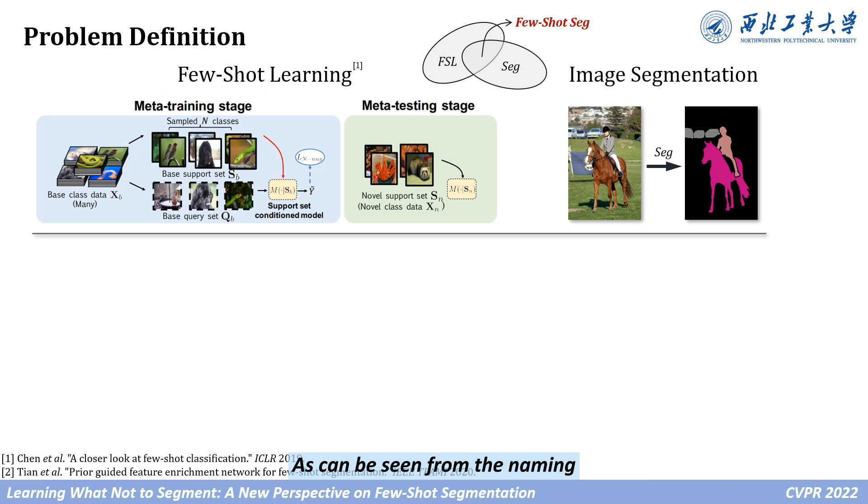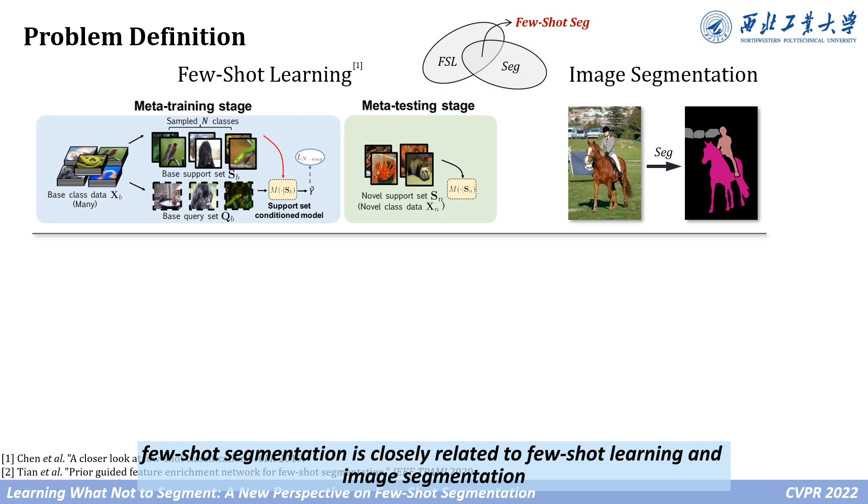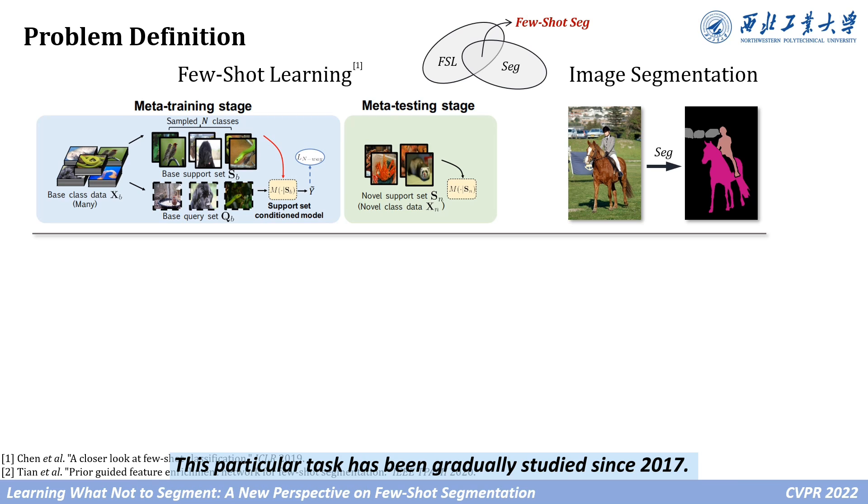As can be seen from the naming, Few-Shot Segmentation is closely related to Few-Shot Learning and Image Segmentation. This particular task has been gradually studied since 2017.